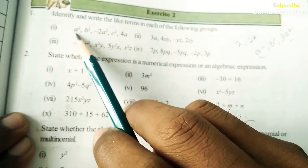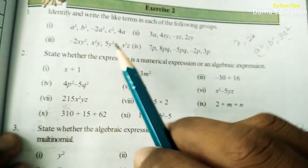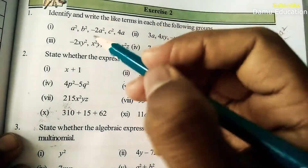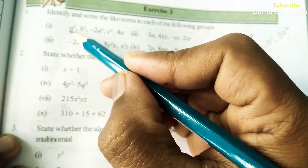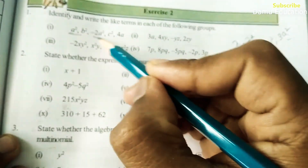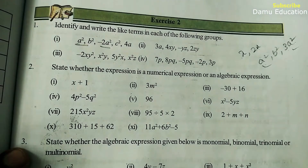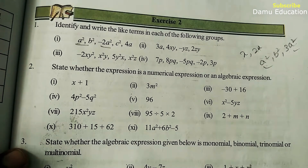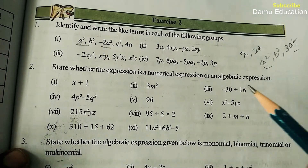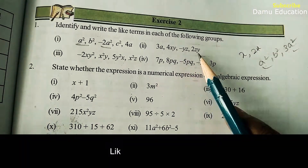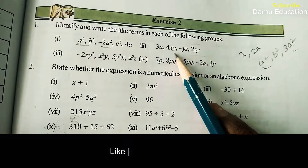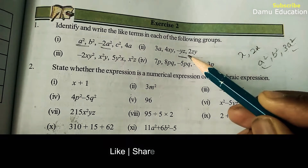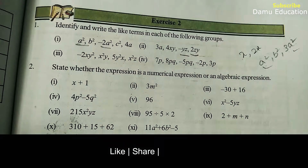So here we need to find the like terms. a square is there — is there any other a square? Yes, a square and minus 2a square are like terms. In the second question, 3a is there but there is no other a term. xy is there, yz is there — so minus yz and 2azy are like terms.